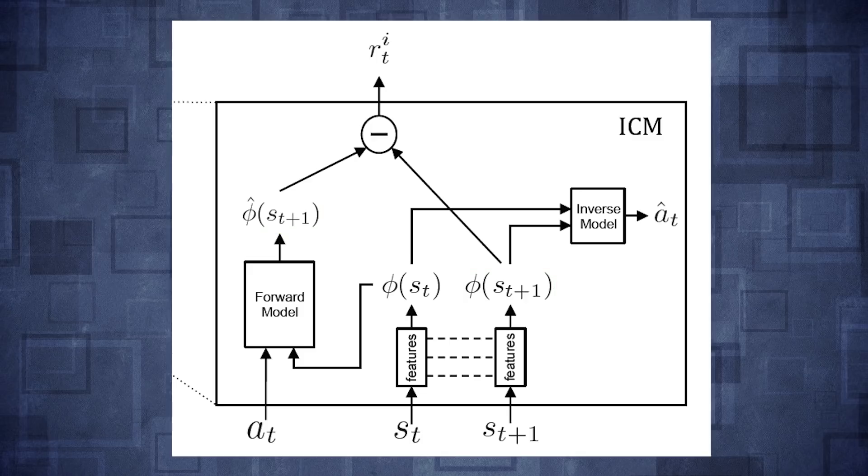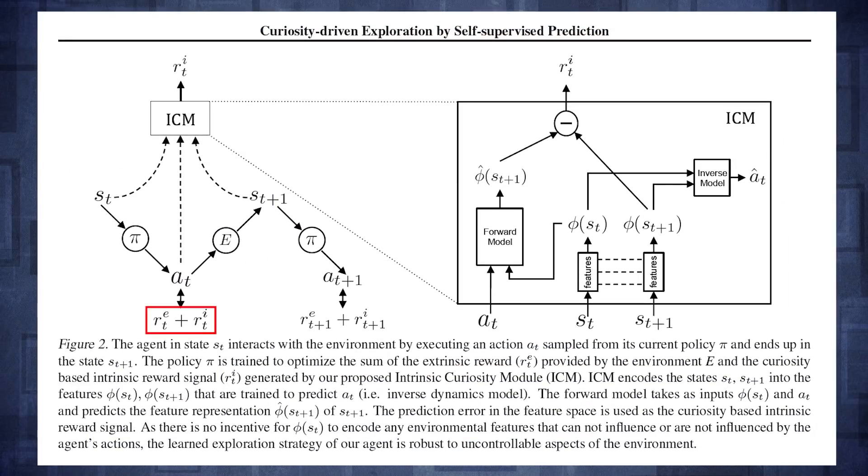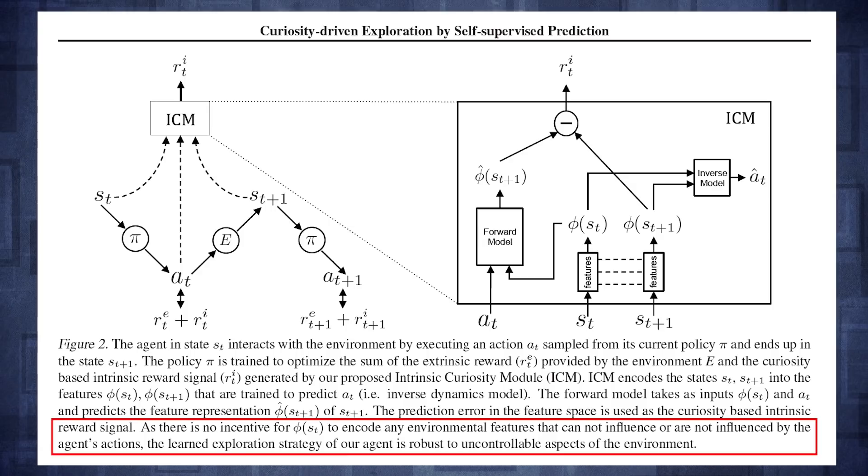And so going back to our example of the tree leaves, since the motion of those leaves cannot be controlled by actions of the agent, there is no incentive for the feature encoders to actually model the behavior of those tree leaves, because in the inverse model, those features will never be useful for actually predicting the action that the agent took. And therefore, the resulting features from our extraction pipeline will be completely unaffected by irrelevant aspects of our environment, and we will get a much more robust exploration strategy.